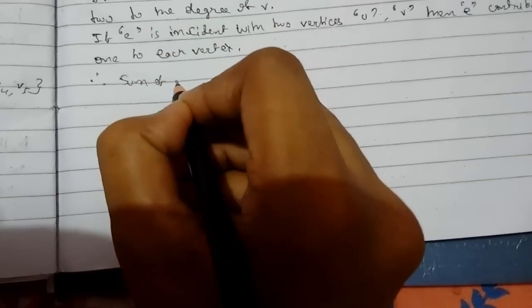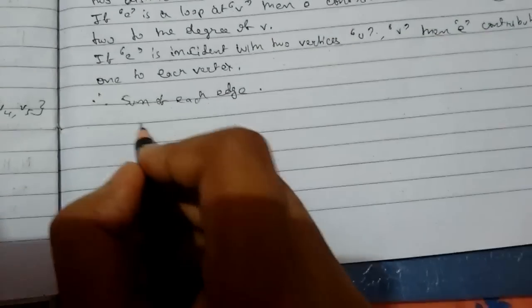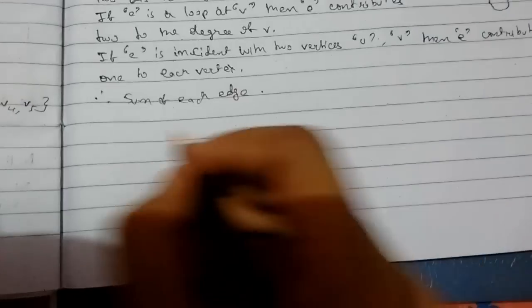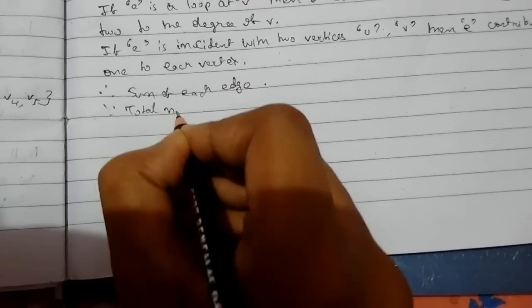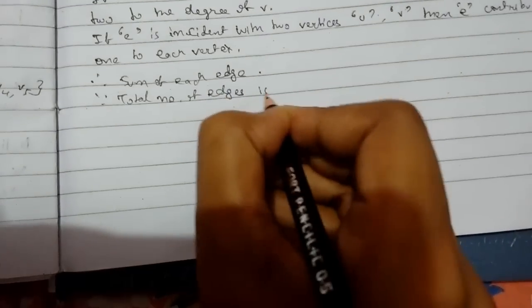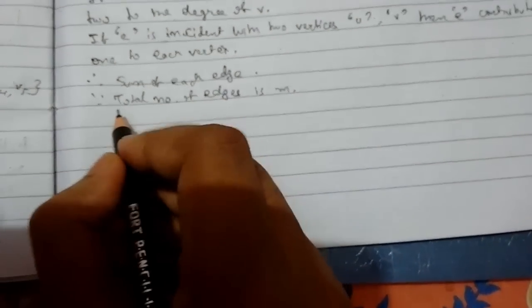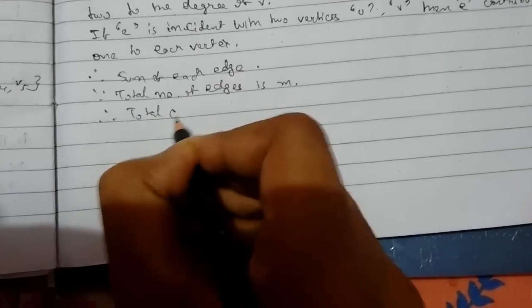We know that since the total number of edges is m, therefore total contribution will be twice m because each edge contributes to degree.